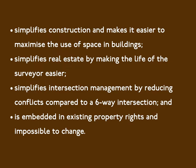So why should we have 90-degree rectilinear grids? Proponents claim it simplifies construction and makes it easier to maximize the use of space in buildings, simplifies real estate by making the life of the surveyor easier, simplifies intersection management by reducing conflicts compared to a six-way intersection, and is embedded in existing property rights and impossible to change.